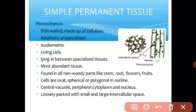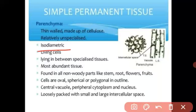Second, parenchyma is isometric. Isometric means equal in diameter. Isometric means all cells of the parenchyma tissue have an equal diameter.